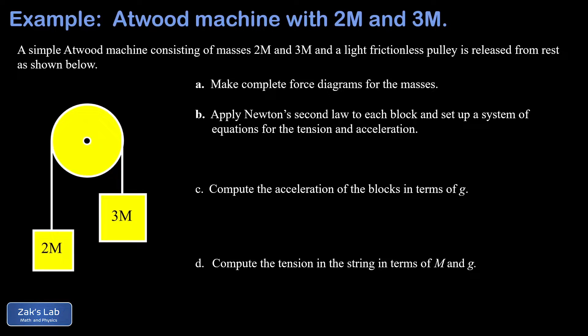In this video, we're looking at a vertical Atwood machine with two masses that are given in a very general form. One of them is 2m and one is 3m, where m is just some unknown mass quantity. We're told the pulley is light and frictionless, and what this means for our force analysis is that the tension is going to be the same on each side of the string.